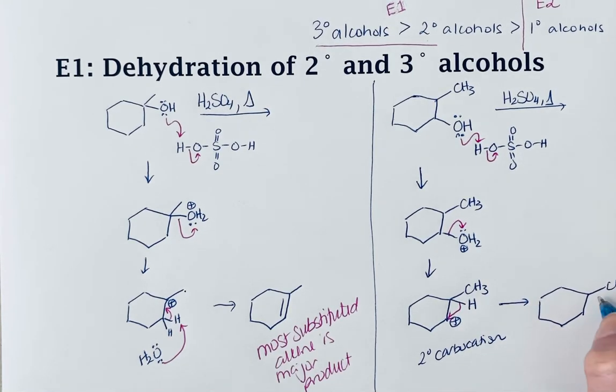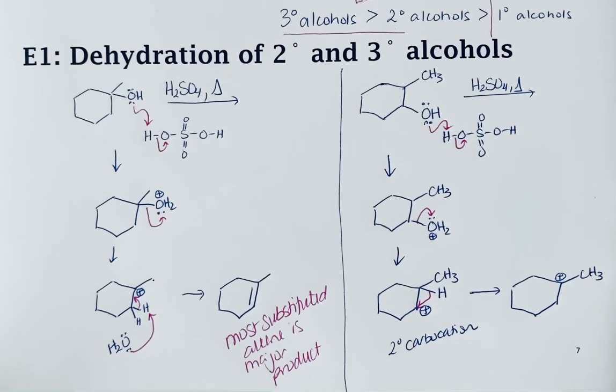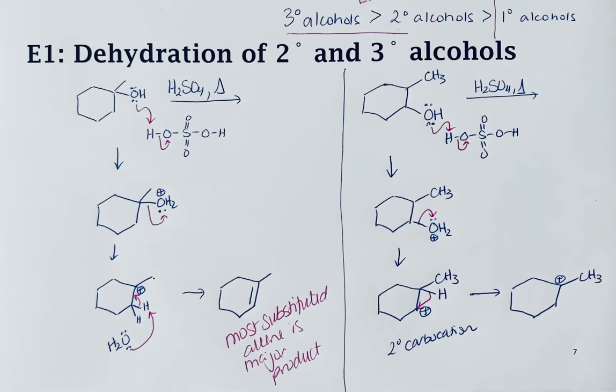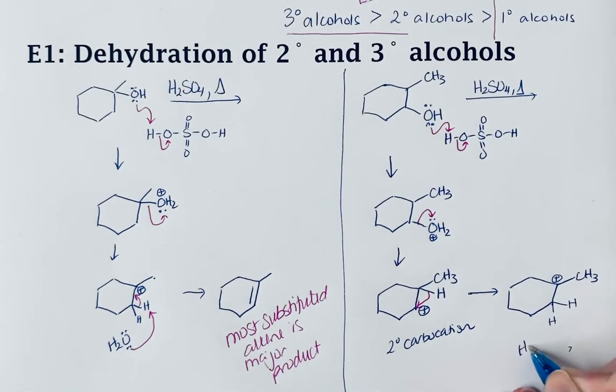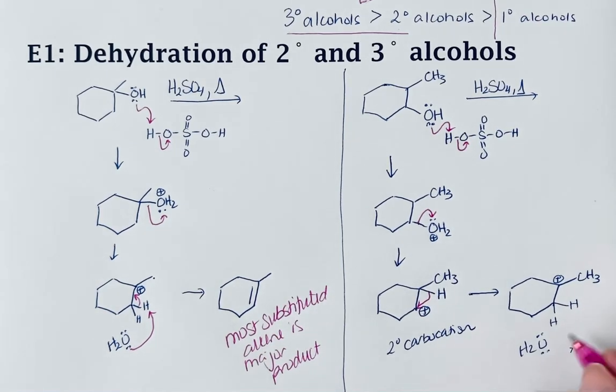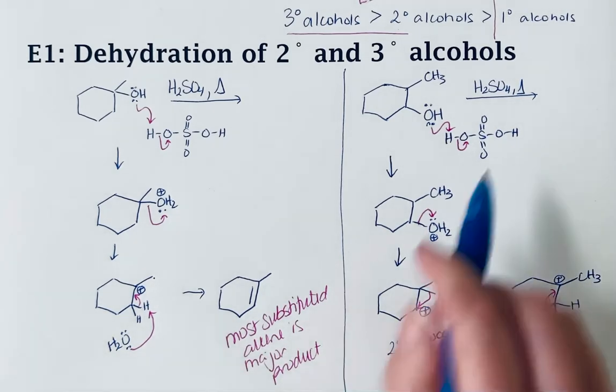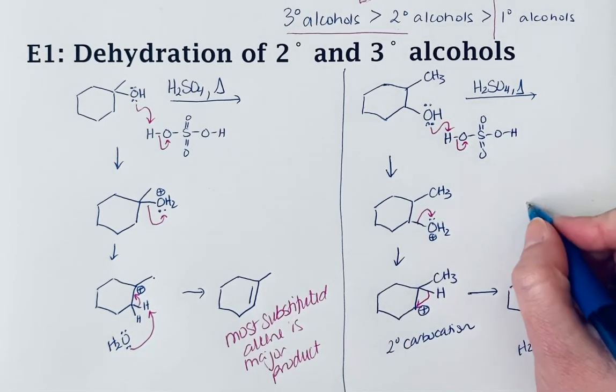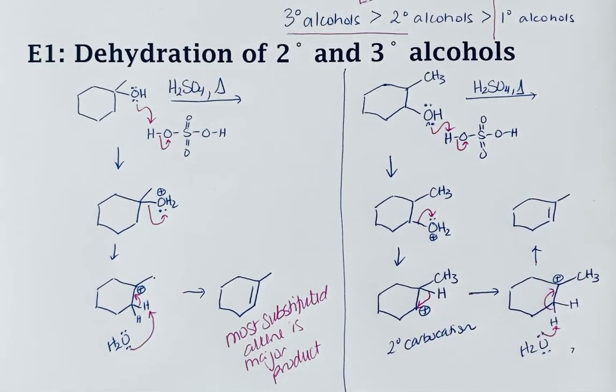Now we have the exact same carbocation we had in the previous example. I'm going to take a beta hydrogen from the carbon that will give us the most substituted alkene possible. Both of these alcohols would give you the same alkene as a product.